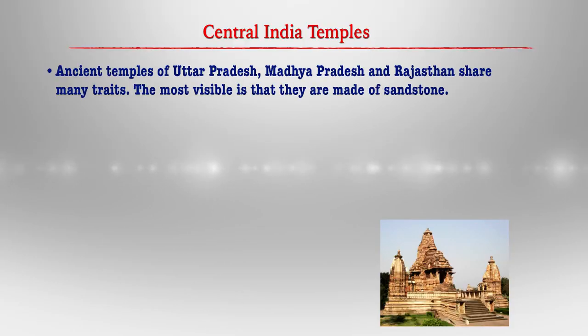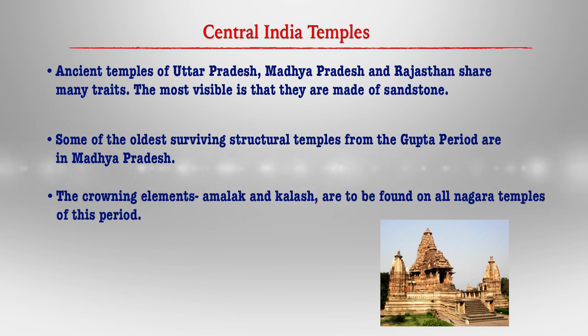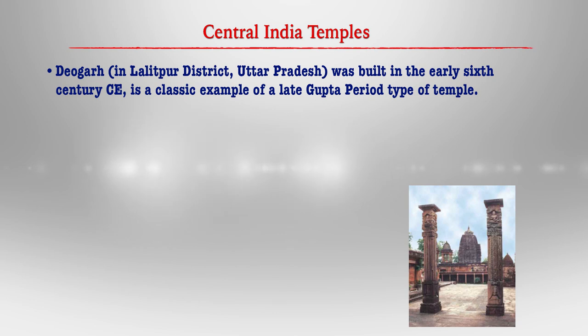The central Indian temples are different from those found in other parts of India. However, the ancient temples of Uttar Pradesh, Madhya Pradesh, and Rajasthan share many similar features; they are mostly made of sandstone. We still have old surviving structural temples from the Gupta period in Madhya Pradesh. We have the Kalasha which is found in all the Nagara temples of this period. Today these temples are well preserved by the government and attract tourists. Udaygiri, on the outskirts of Vidisha in Madhya Pradesh, is part of a large Hindu complex of cave shrines.